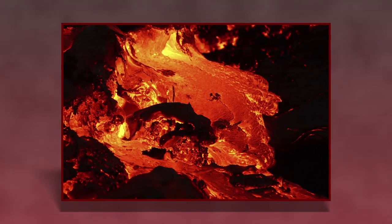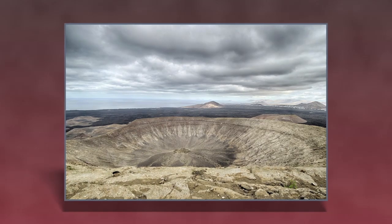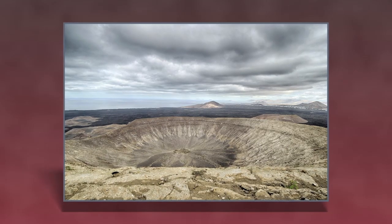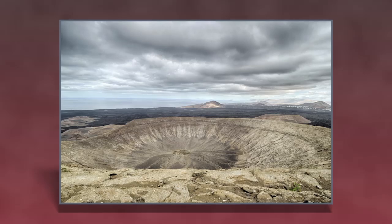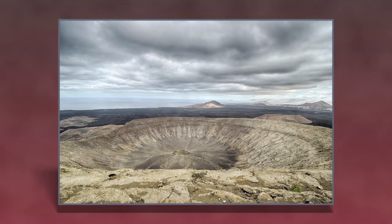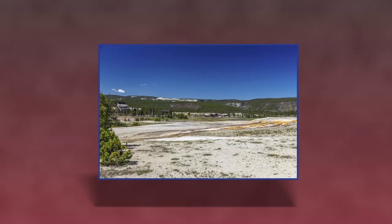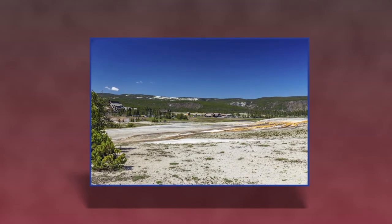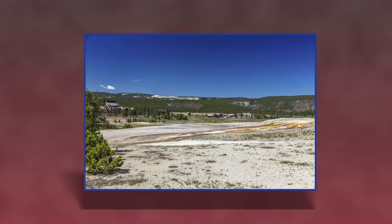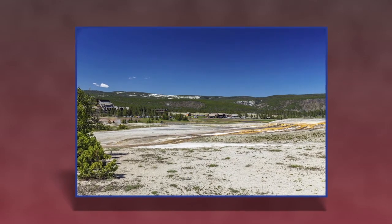Volcanic eruptions can also form craters and calderas. These are large, bowl-shaped depressions made when a volcano collapses after a major eruption empties the magma chamber. An example of a caldera is the Yellowstone Caldera. A large portion of Yellowstone National Park is a caldera formed by volcanic eruptions.